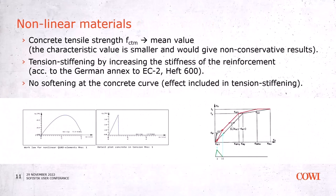How is the non-linear material defined in SOFISTIK? The main parameter is the tensile strength, based on the mean value rather than the characteristic value. Using the characteristic value would give lower tensile strength, more cracking, lower stiffness, and less reinforcement — which is not conservative. Additionally, the Eurocode crack formulation is always based on the mean value, so we decided to go with the mean value.